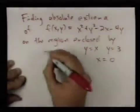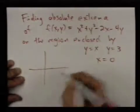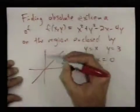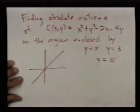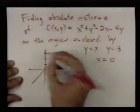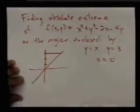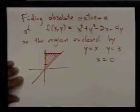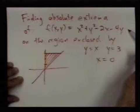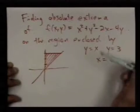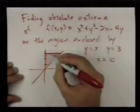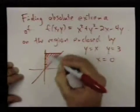Let me just draw this region where we have the line y equals x, and x equals 0 is just the y axis, and then we have y equals 3. So we have this region here, and our function is certainly continuous, so the extreme value theorem says that it attains both its maximum and its minimum values somewhere on this region.